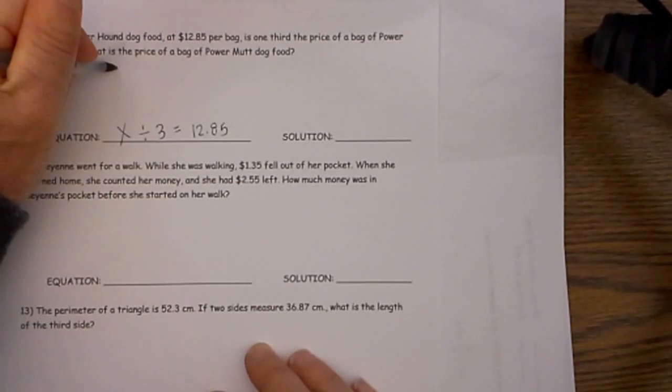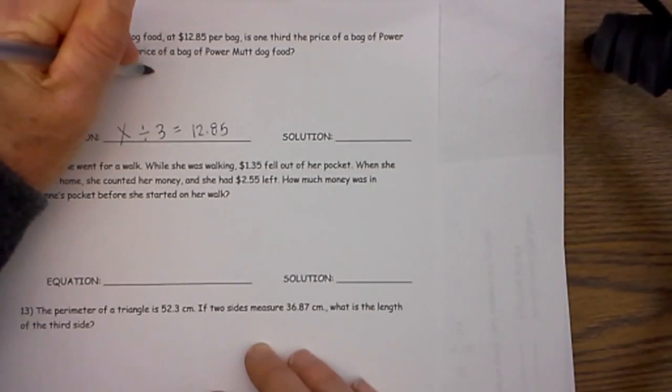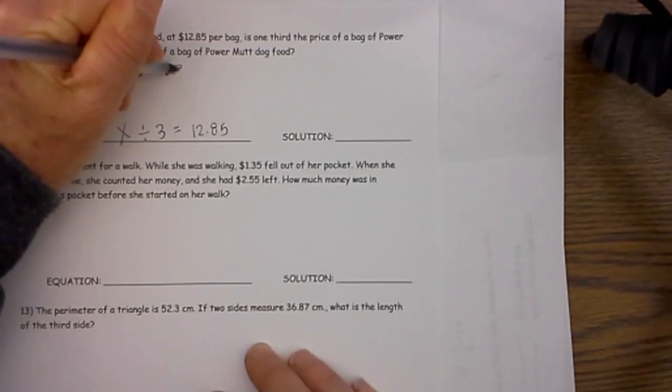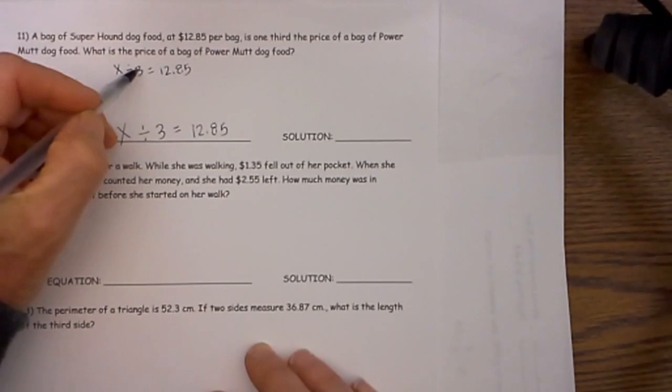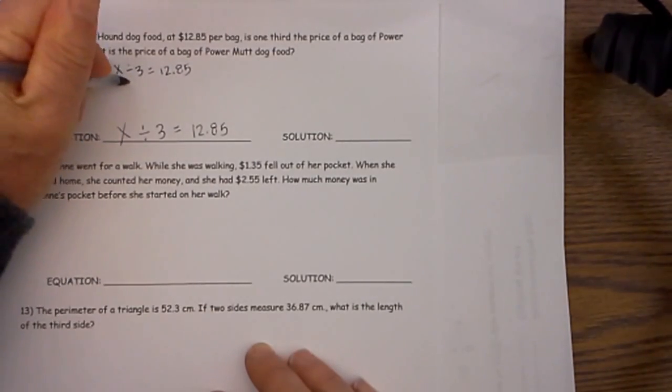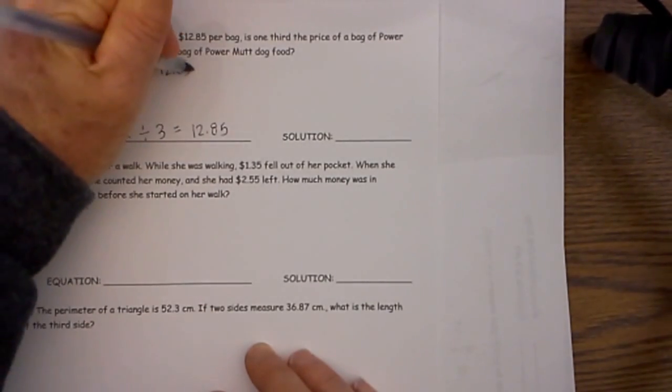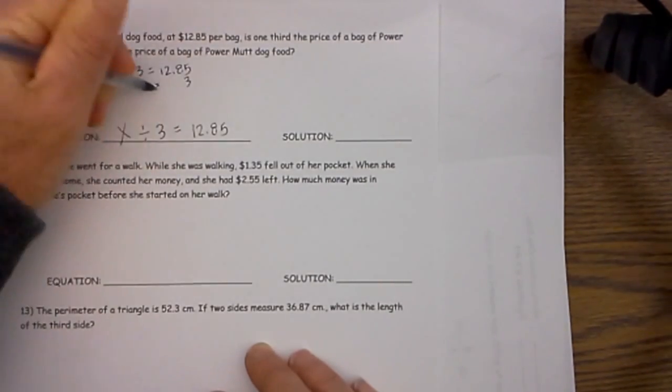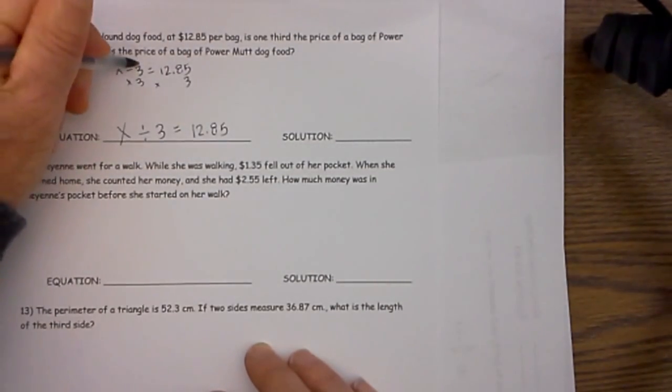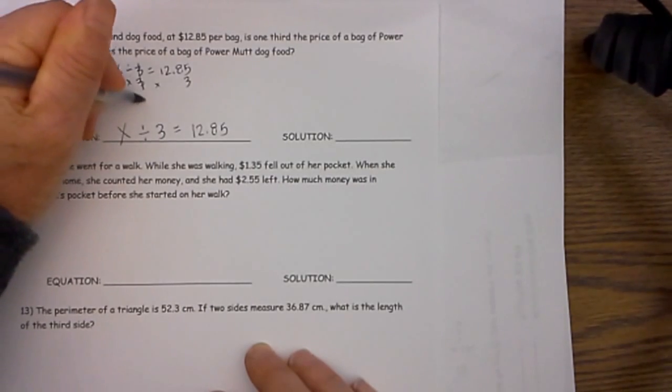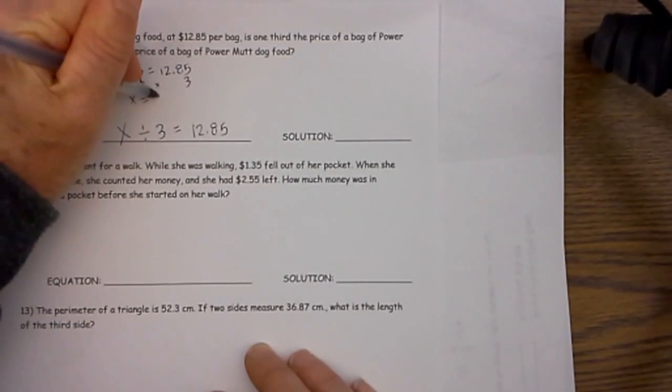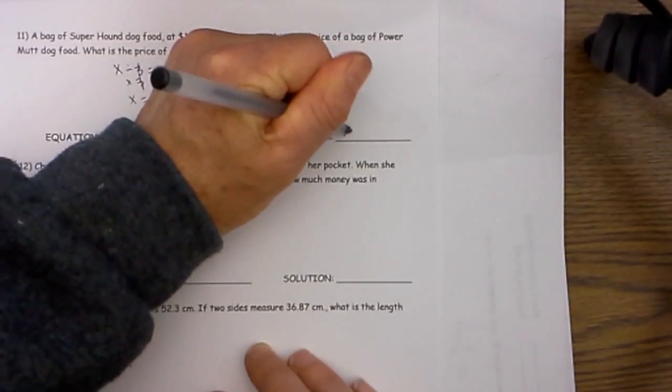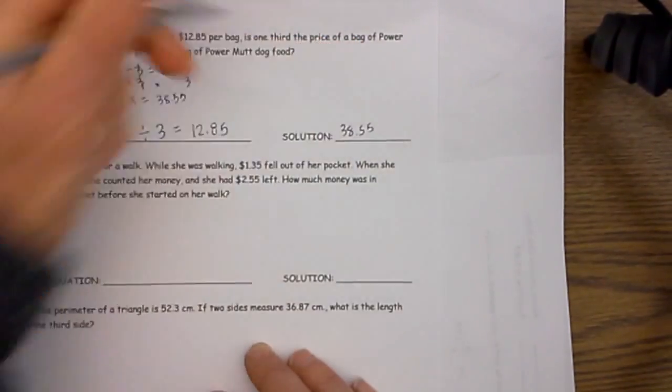Now let's go ahead and solve that. We have x divided by 3 is equal to $12.85. You know with a one-step equation what you do to one side you must do to both. To get rid of the division we will multiply both sides by 3. That will eliminate the 3. So the 3's cancel. So x is left with $12.85 times 3 which is $38.55. So the solution is $38.55.